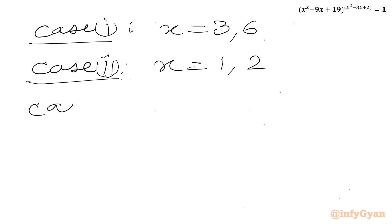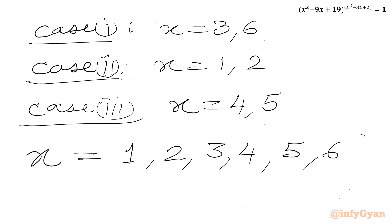So in case 1 we got x equal to 3 and 6 as solutions. From case 2 we calculated x equal to 1 and 2. And from last case, the third one, x was 4 and 5. So I can write here we have 6 solutions: 1, 2, 3, 4, 5, 6.